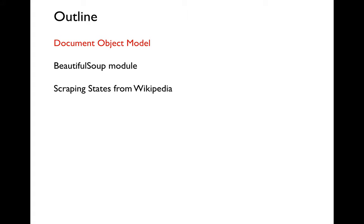To understand a web page we need some sort of model — a structure that goes beyond just a bunch of text and tags. That structure is called the Document Object Model. We'll talk about that, then learn about the Beautiful Soup module, and finally create a Python program that pulls information about the 50 US states from Wikipedia and puts that data into a table for analysis.